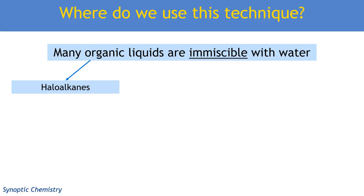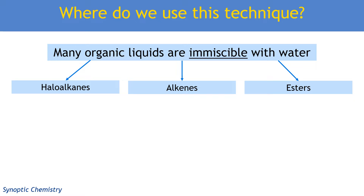We might use it, for example, in the preparation of a haloalkane, using nucleophilic substitution with an alcohol. Or we could use it in the preparation of an alkene, using an elimination reaction from a haloalkane. Or we could use it in the preparation of esters. Esters, although they are polar because they've got those C-O bonds, they don't have hydrogen bonding.